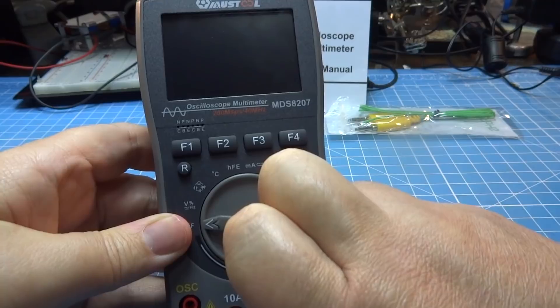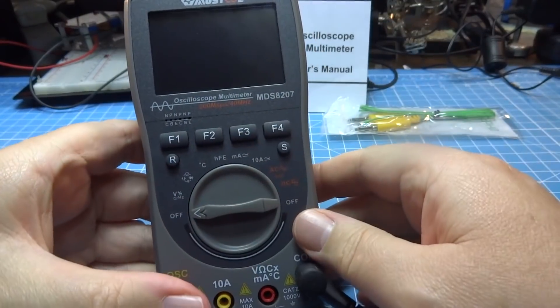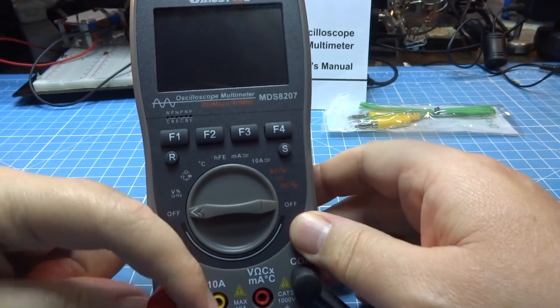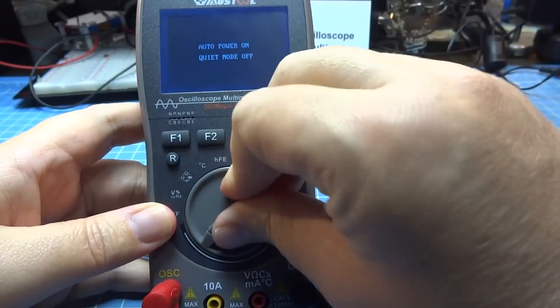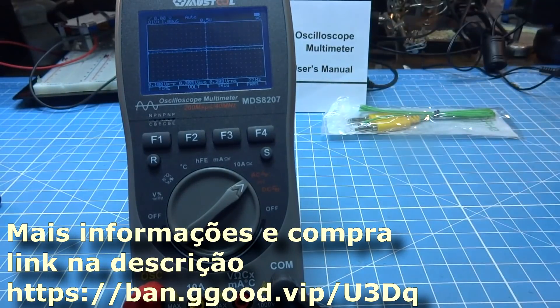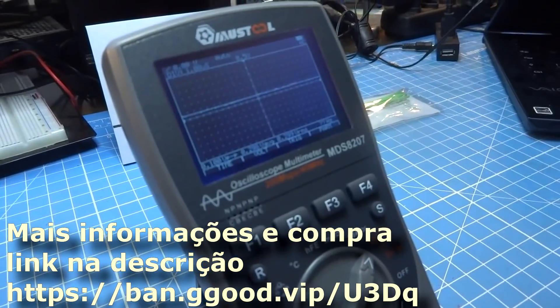O MDS-8207 foi muito mais do que uma evolução da linha. Foi um redesenho de produto, trazendo agora sim um osciloscópio digno e muito útil para a bancada. As características do equipamento são boas, tanto para o multímetro como para o osciloscópio.